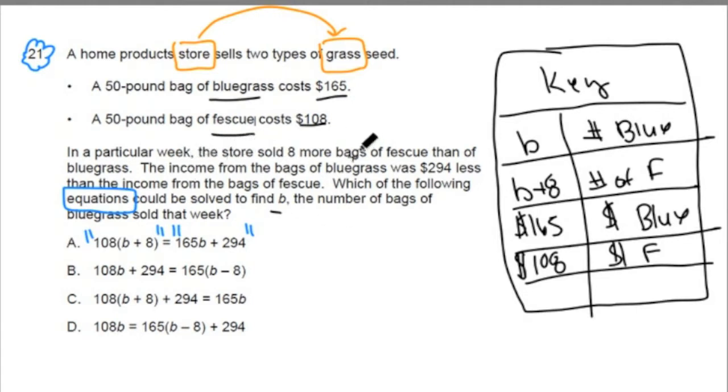Then we get to this sentence here. The income from the bags of bluegrass. It says here the income from the bags of bluegrass was $294 less than the income from the bags of fescue. Now this is important because that word income, I don't think it's very clear, but it's talking about total income. Total income or really total money made from the fescue bags sold that week and from the bluegrass bags sold that week.